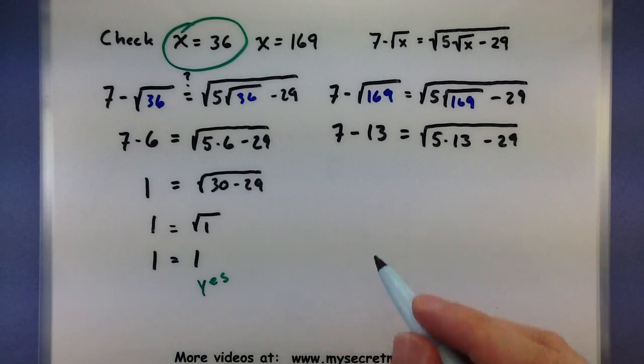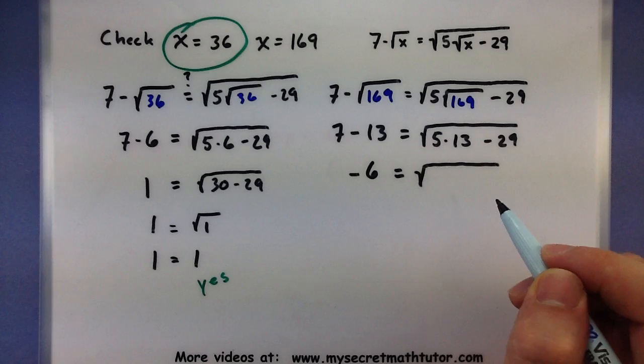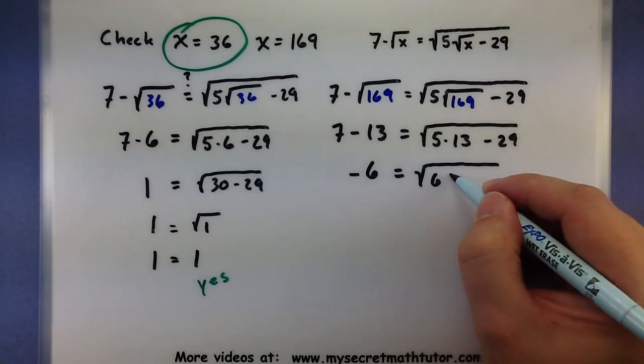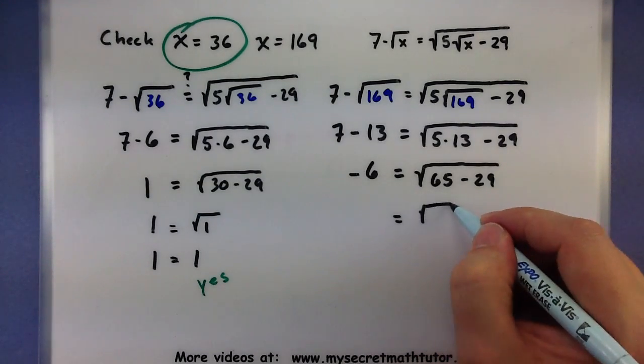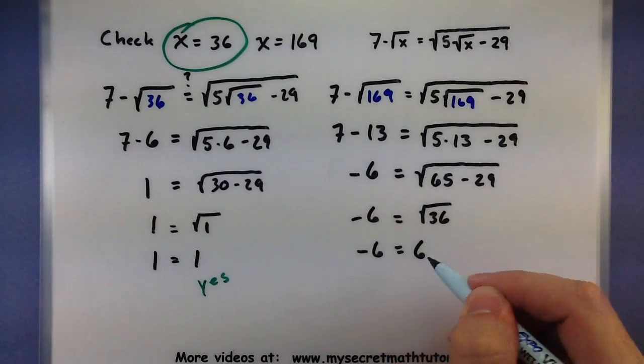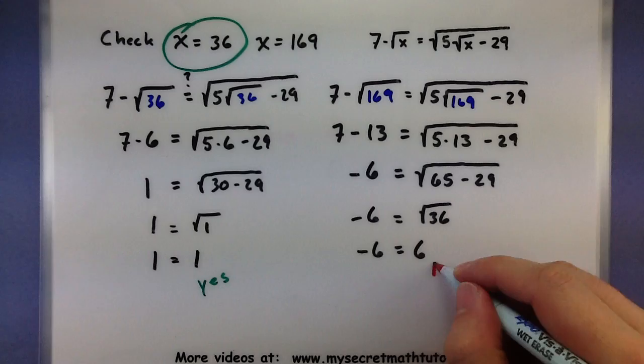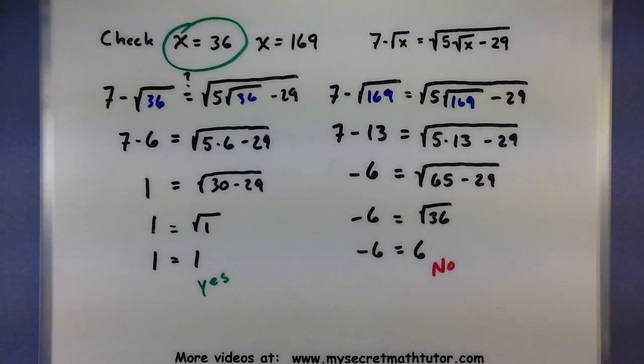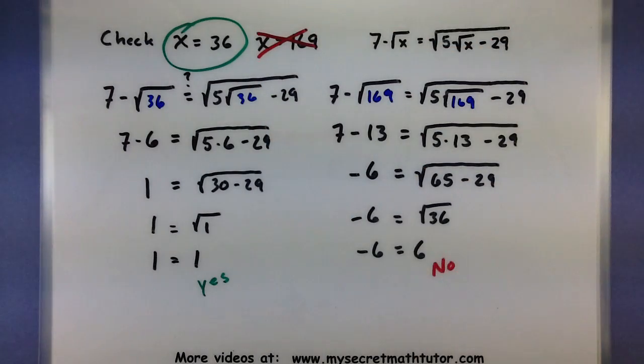7 minus 13 over there would be a negative 6. Let's keep checking on the right side. So, 5 times 13, 65. 65 minus 29 is 36. So, I have negative 6 is equal to 6. And, of course, looking at that one, we're so close. But a negative number cannot equal a positive number. So, we're going to say, nope, those two things are not the same. And we do not want x equals 169. So, the only solution for this next one is x equals 36.